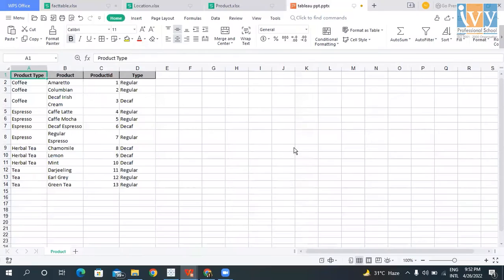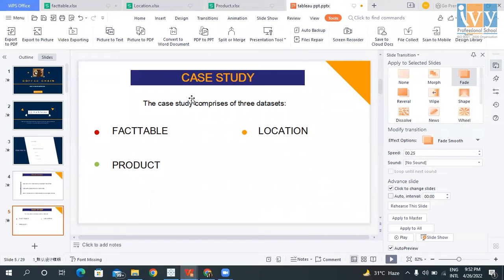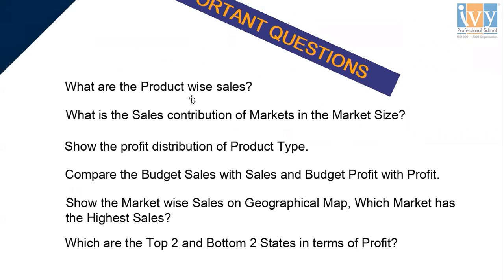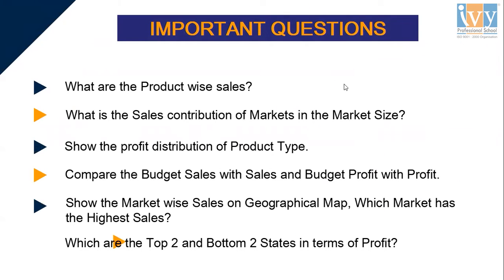Before going to Tableau, I'd like to show the questions I've prepared for the dataset. These are: what are the product-wise sales? What is the sales contribution of markets in the market size? Show the profit distribution of product type. Compare the budget sales with sales and budget profit with profit. Show the market by sales on a geographical map and which market has the highest sales. And which are the top two and bottom two states in terms of profit?